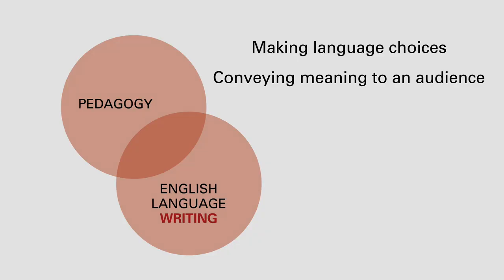In the fifth module, we noticed that people use technology to write many different types of texts. We saw that writing requires making language choices and conveying meaning to an audience. We also recognized the role of technology in making writing a process, providing grammatical feedback to writers, and supporting collaboration between writers. Technology transforms writing into opportunities for language learning.